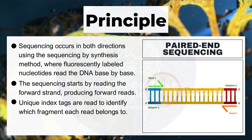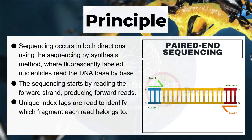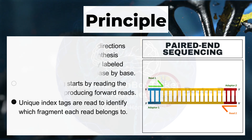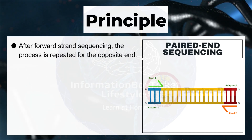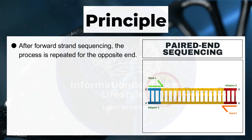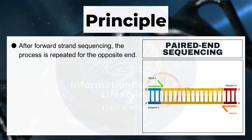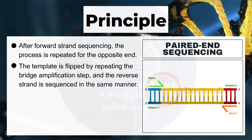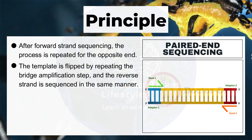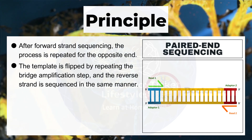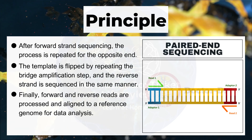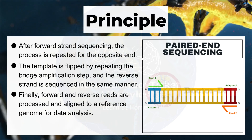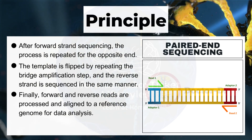Unique index tags are read to identify which fragment each read belongs to. After forward strand sequencing, the process is repeated for the opposite end. The template is flipped by repeating the bridge amplification step, and the reverse strand is sequenced in the same manner. Finally, forward and reverse reads are processed and aligned to a reference genome for data analysis.